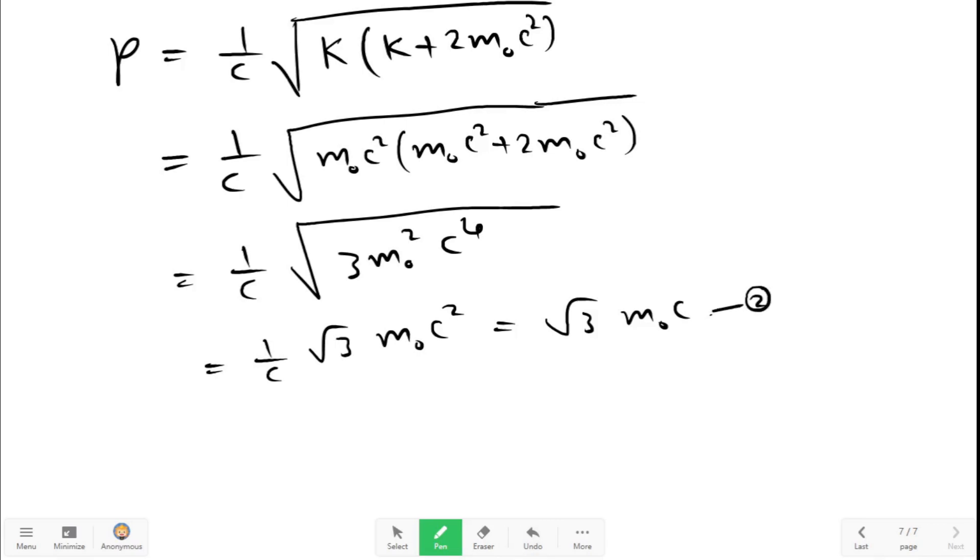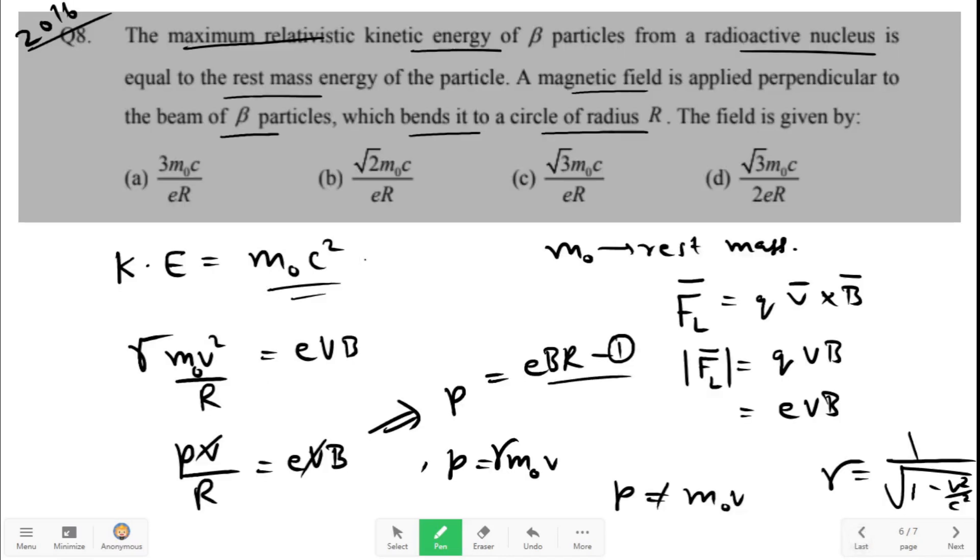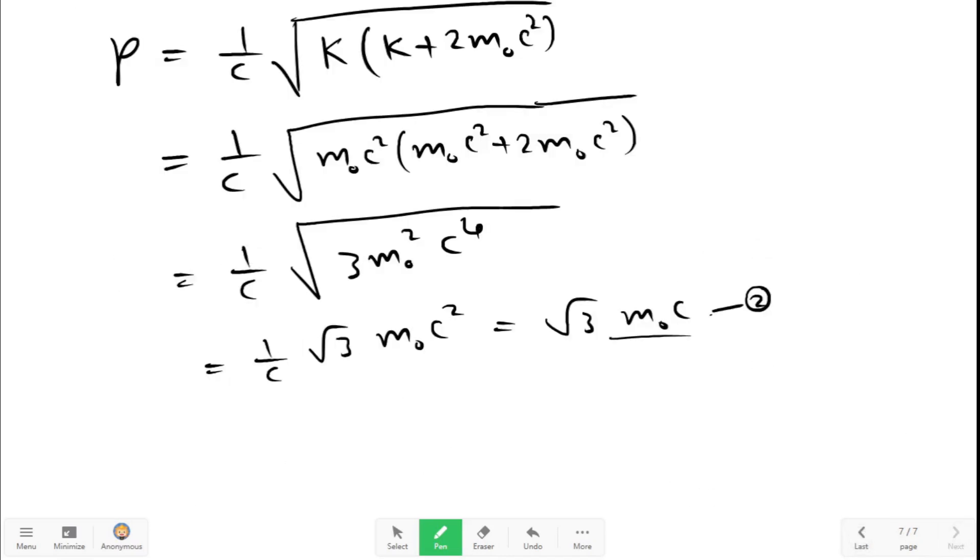This is equation 2. Now let us equate the RHS of equation 1 and equation 2. Then we will get √3 m₀c is equal to eBR, or B is equal to √3 m₀c divided by eR.